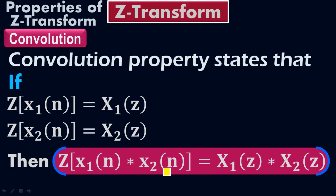This is what convolution means. This asterisk symbol is the indication of convolution. Now let me check the mathematical proof.